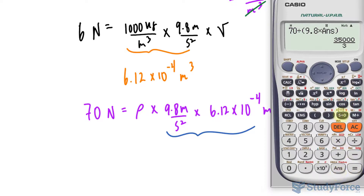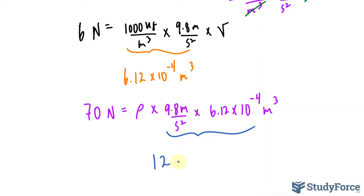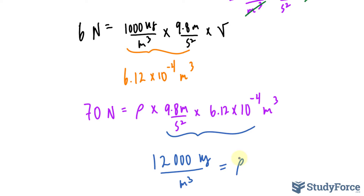We get a density of approximately 11,666, or about 12,000 kg/m³ rounded to two significant figures. The real density of gold is 19 × 10³ kg/m³, which is much higher. The metal closest to our calculated value is lead, which has a density of 11 × 10³ kg/m³. This suggests the statue isn't gold, but perhaps gold-plated with the underlying metal being lead. This is an old-school method for determining whether something is truly gold.